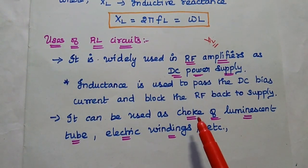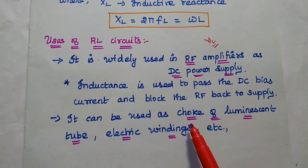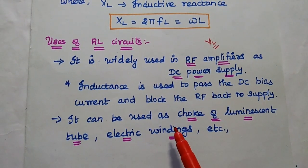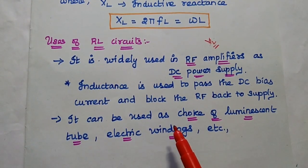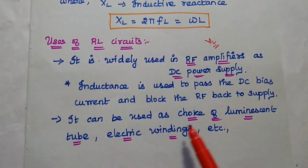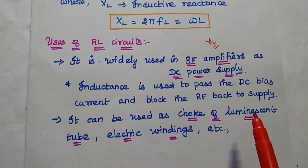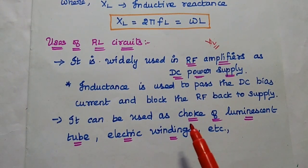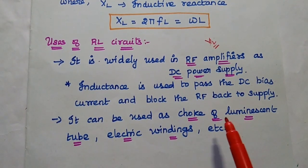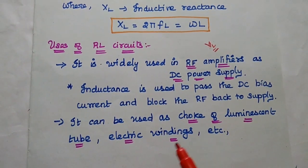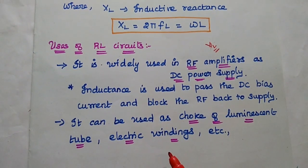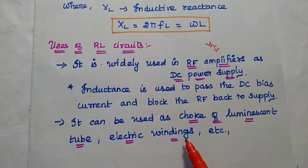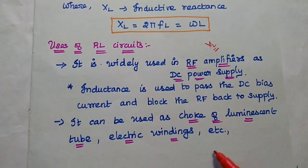In real-time applications, the RL series circuit can be used as a choke of the luminance tube — that is, a tube light. It can also be used in electric machine windings, etc.